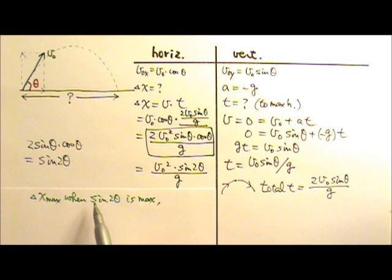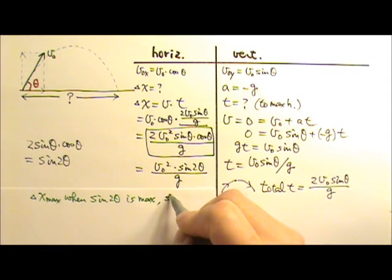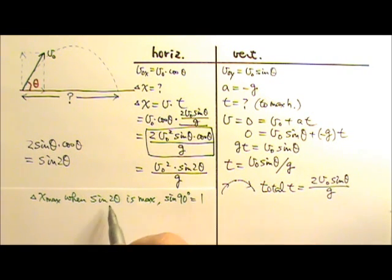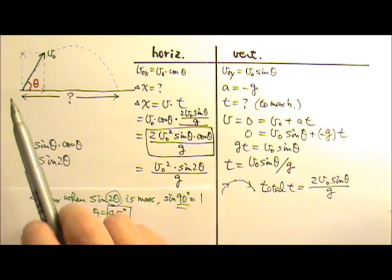And the sine value has a maximum of 1 and that happens at sine 90 degrees, which means 2 theta has to equal to 90 degrees. Which means when the nozzle points at 45 degree angle above the horizontal, water is going to land the farthest away.